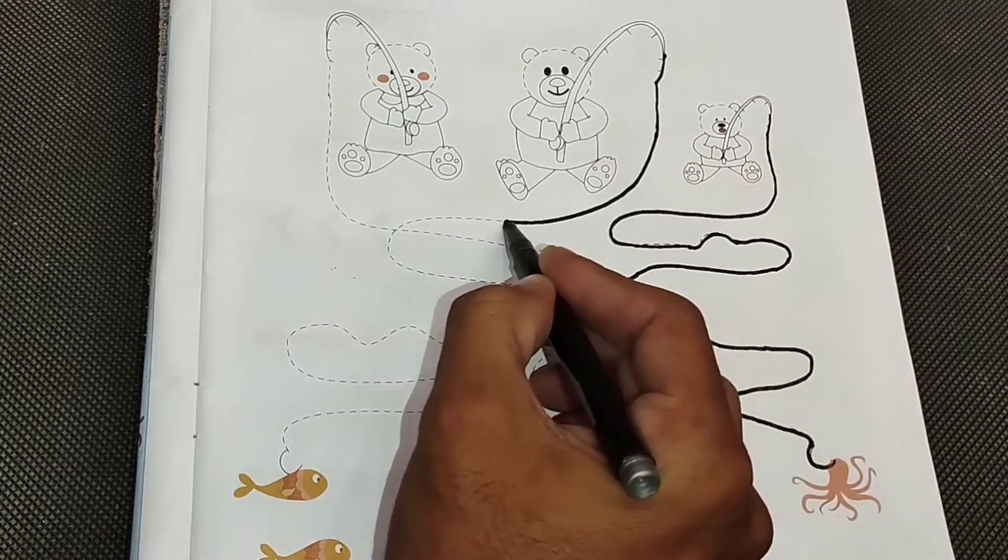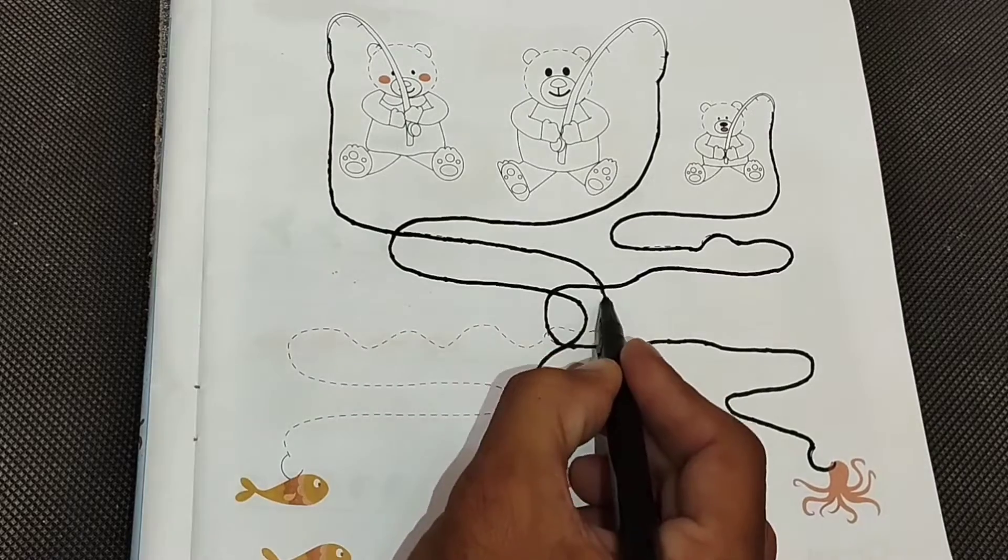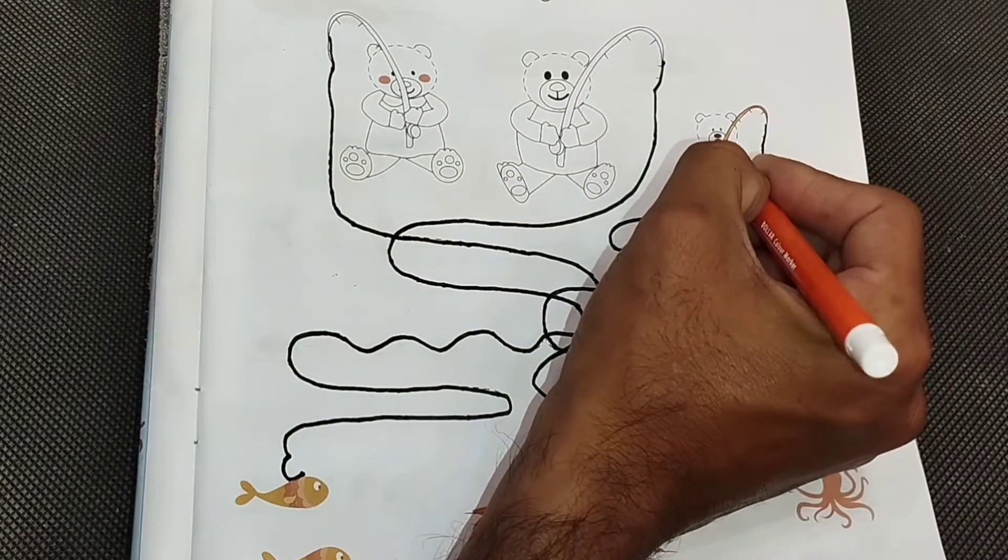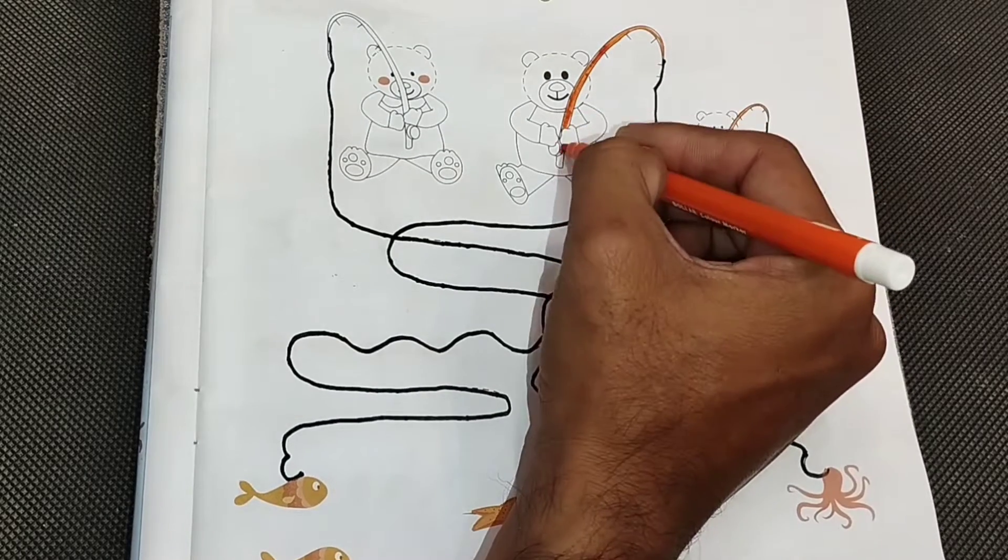A is for Apple, A-A-Apple. B is for Ball, B-B-Ball. C is for Cat, C-C-C-Cat. D is for Dog, D-D-Dog.